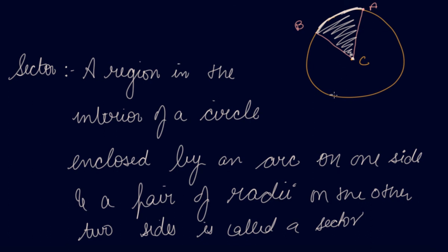If I draw a chord PQ and an arc, that area is a segment. This is a radius. If I draw a line through the center, then that is a diameter.